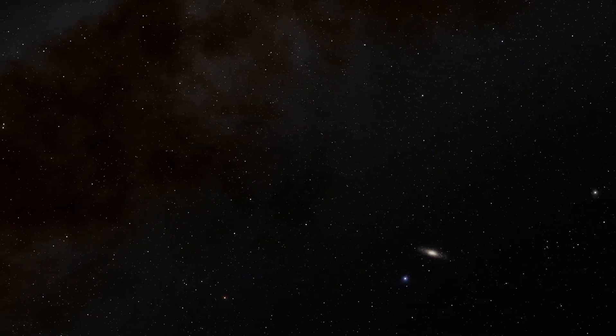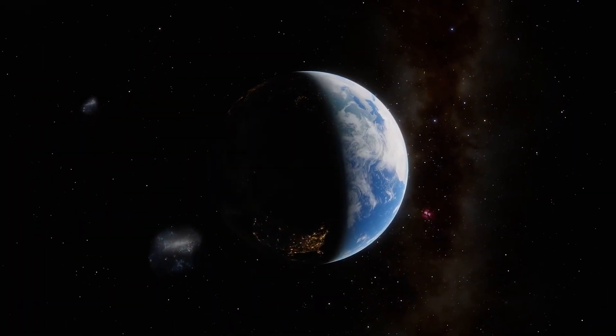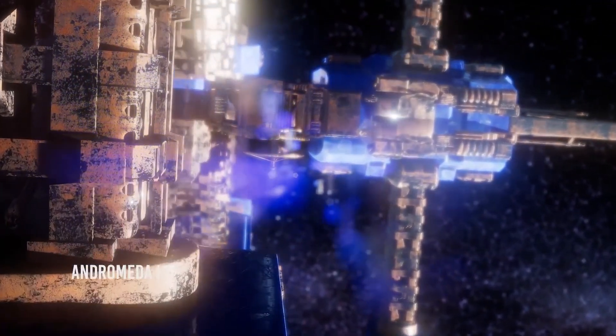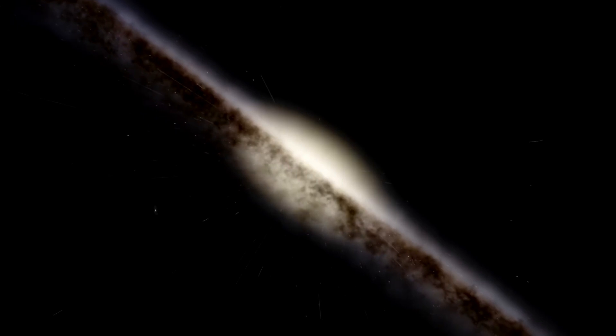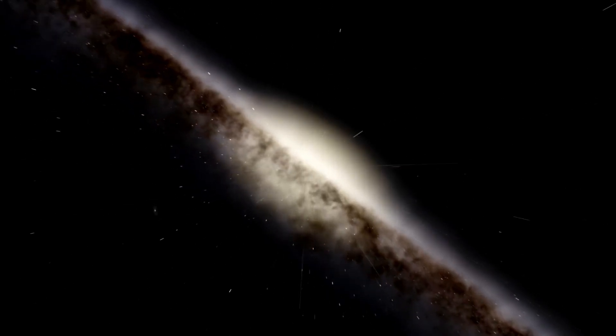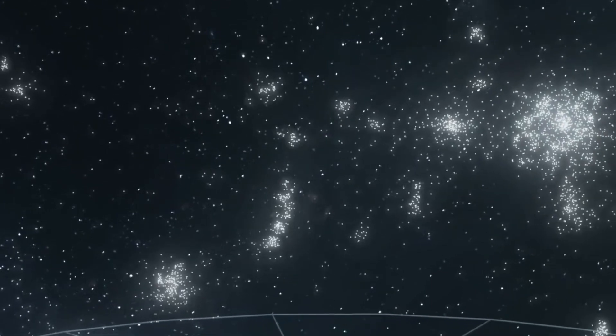Our closest satellite is the dwarf galaxy Canis Major Dwarf, which can be found in the Canis Major constellation. It lies 25,000 light years away from the Earth and 42,000 light years from the center of our galaxy. Appearing like an elongated ellipse, this dwarf galaxy contains supposedly around 1 billion stars, most of which are red giants.